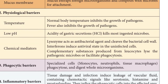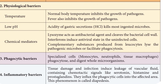The next type is physical barriers. Normal body temperature inhibits the growth of pathogens, and fever also inhibits the growth of pathogens. Normal body temperature, which is 96.4 to 96.8°F, inhibits pathogen growth, and high fever can also inhibit pathogen growth. Low pH: the gastric secretions, that is HCL, also kill ingested microorganisms — when they enter the stomach region, the HCL acidity kills them.